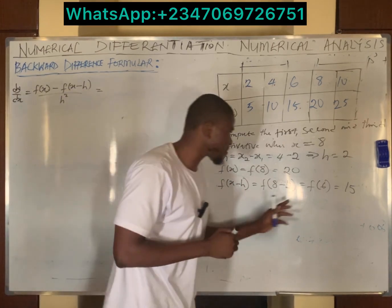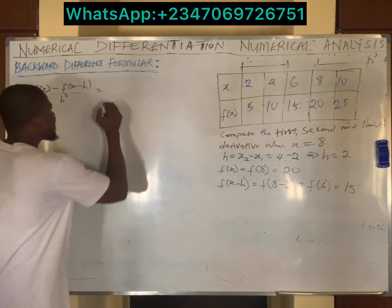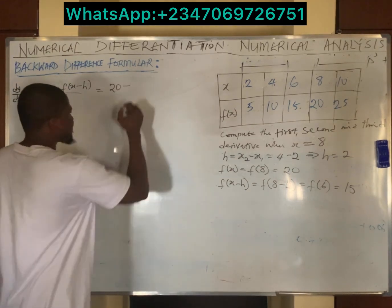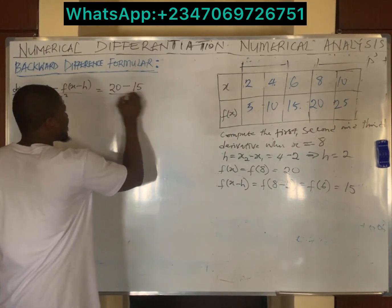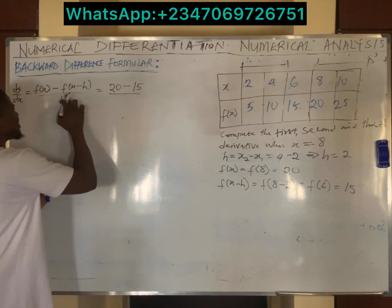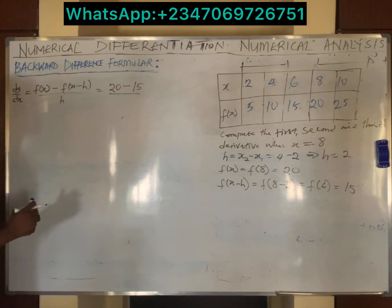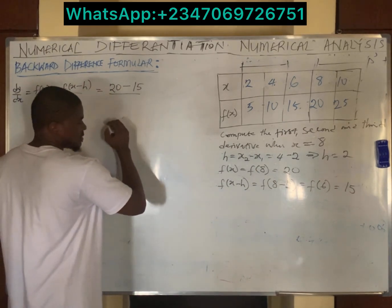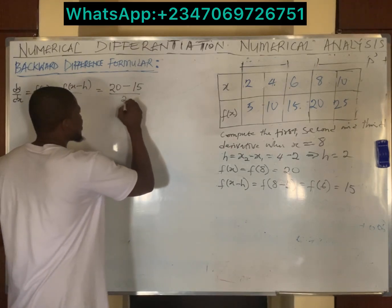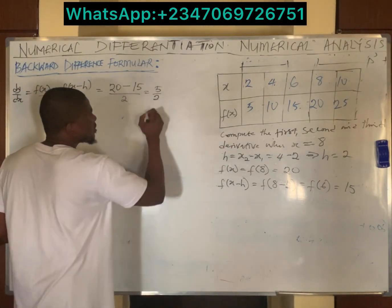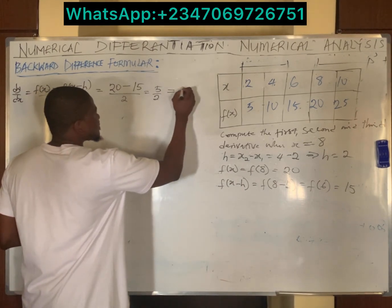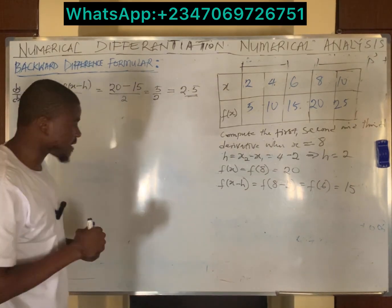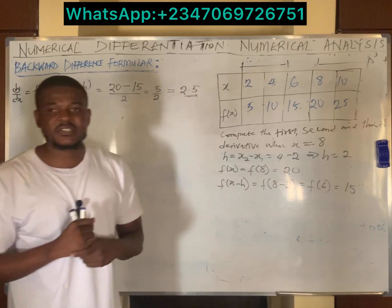Plugging into the first derivative formula: dy/dx equals f(x) minus f(x minus h), divided by h. That gives us 20 minus 15, divided by 2, which is 5 divided by 2. This implies the first derivative equals 2.5. So when x equals 8, the first derivative is simply 2.5.